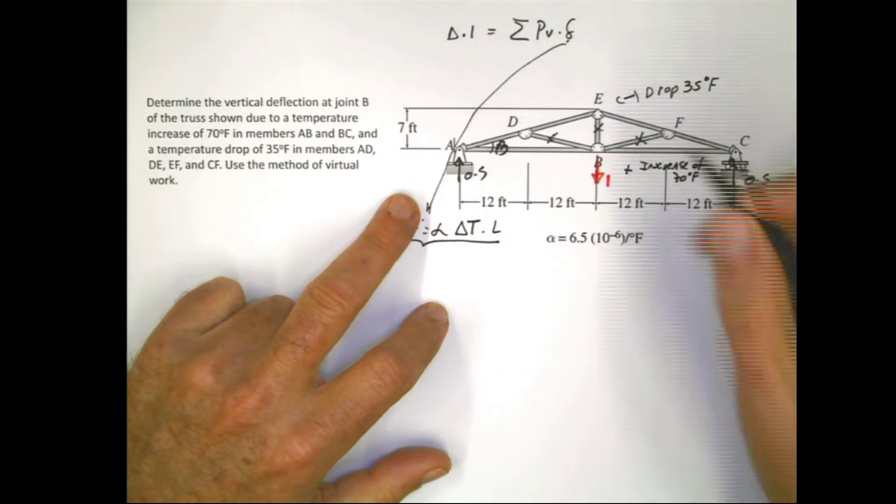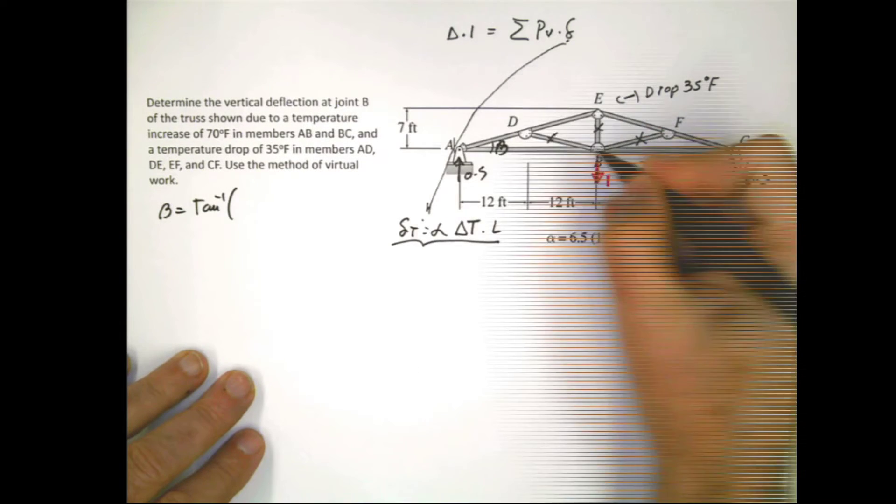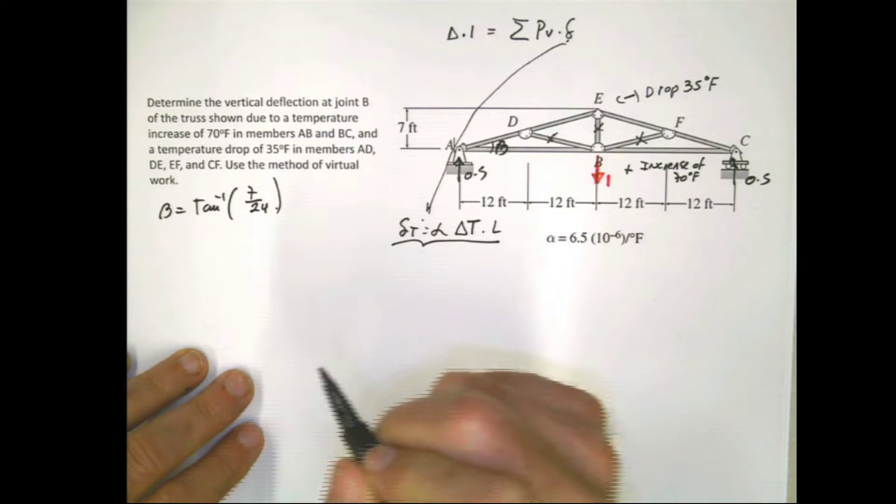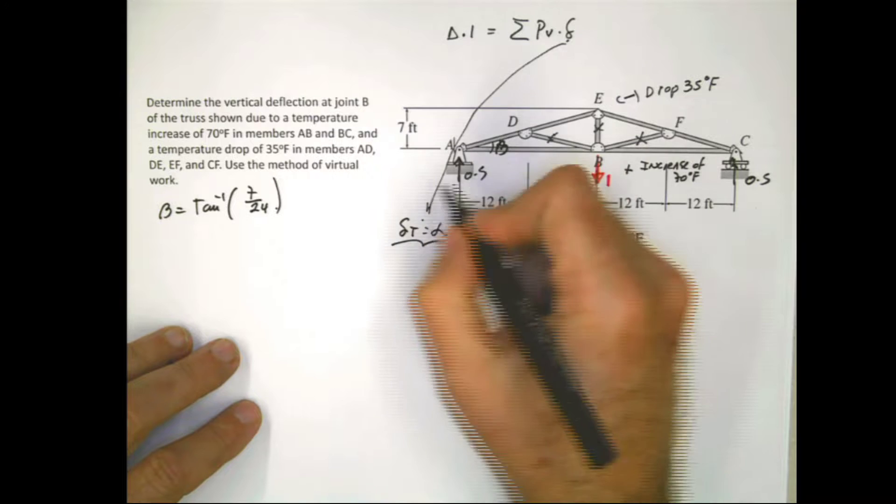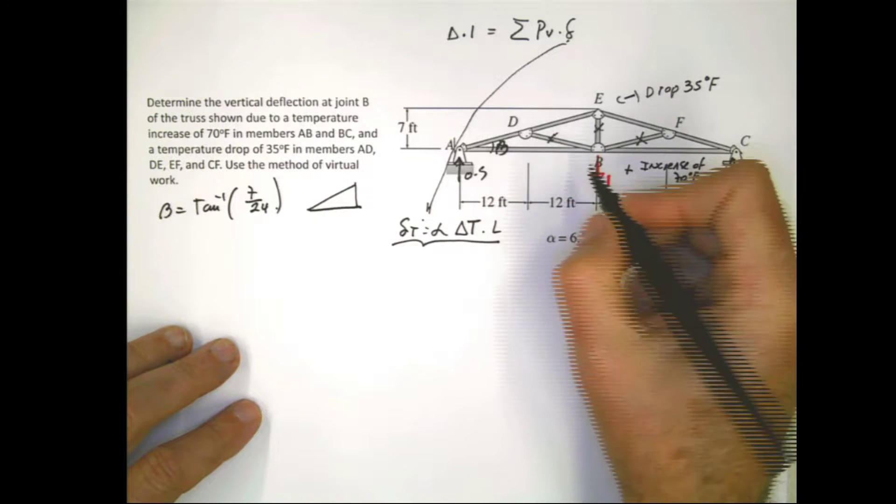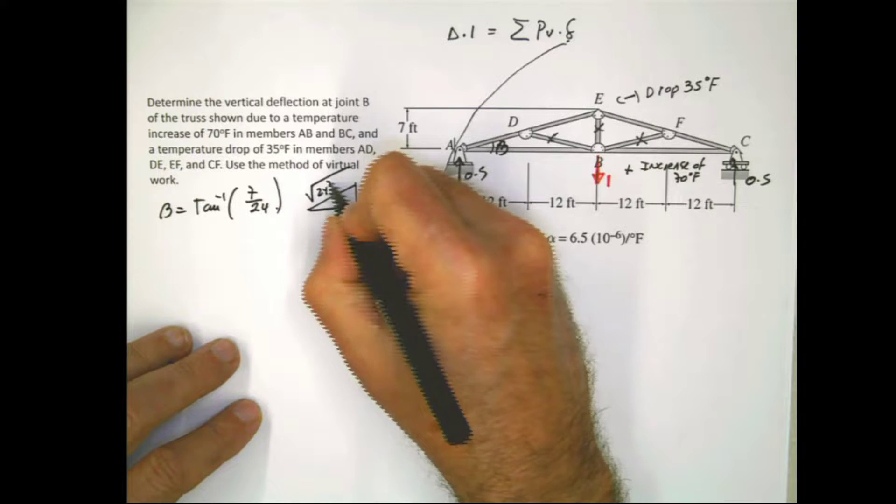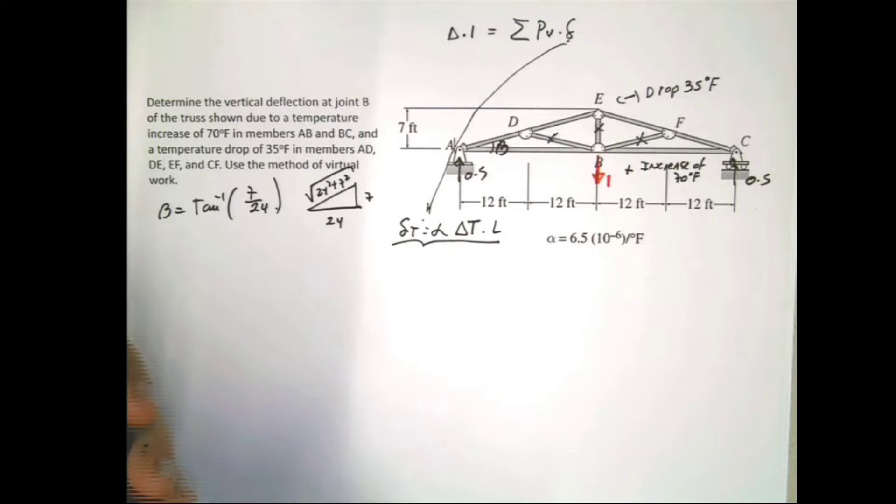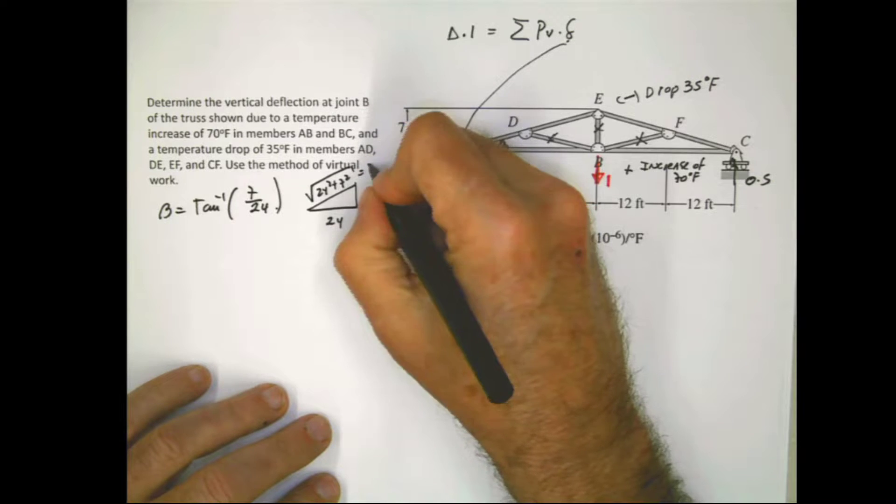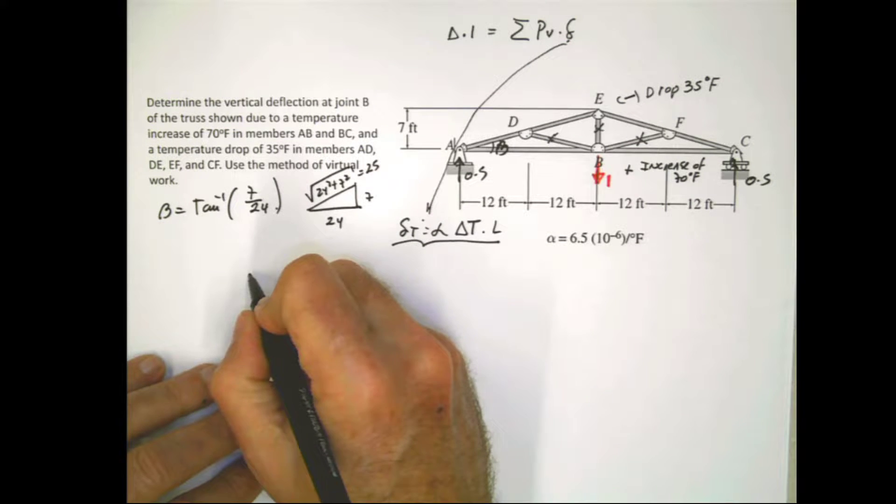But I'm going to calculate, oh, I'm not going to call that alpha, I'm going to call that beta because I don't want to get confused with this one. So beta is going to be the inverse tangent of 7 divided by 24. So if I do that, or I can establish this triangle here and say this is 24, this is 7, and this is the square root of 24 squared plus 7 squared. If I do that, let me see how much is that. So this is going to be 25.